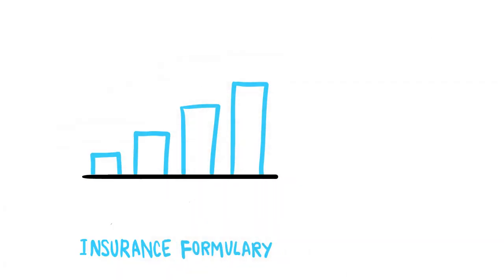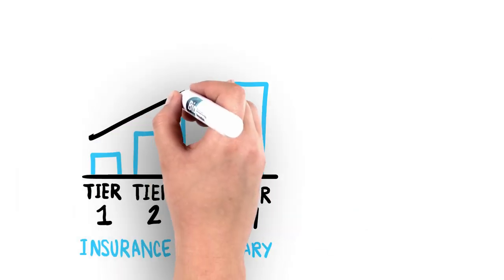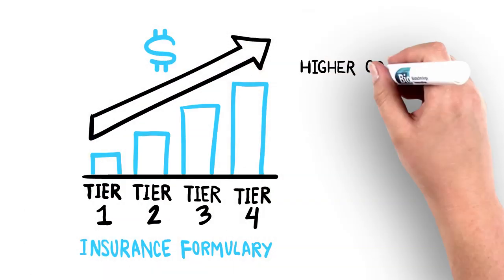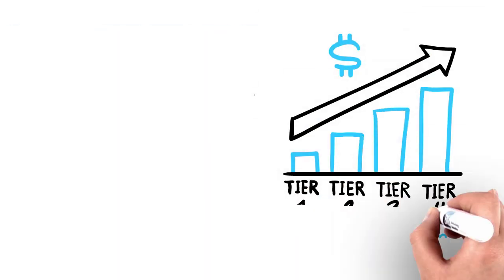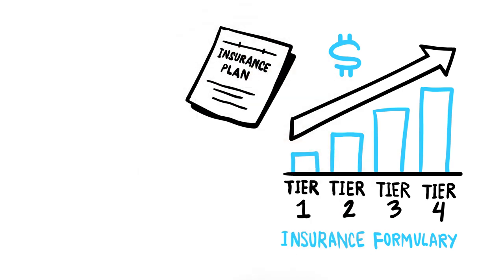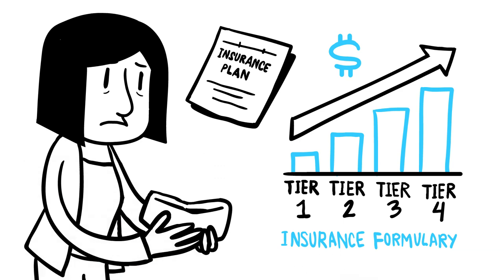In a formulary, each drug is assigned to a patient cost-sharing tier. The higher the tier for the drug, the higher the cost to the patient. Research shows that the difference between what insurance companies pay for drugs and what they require patients like Joni to pay has increased over time.